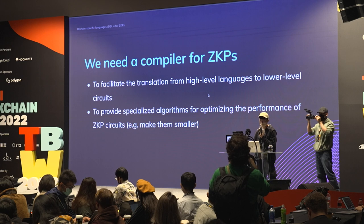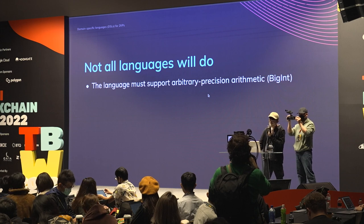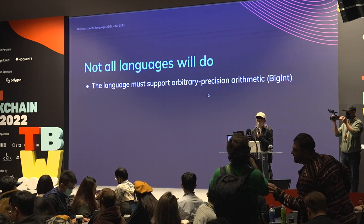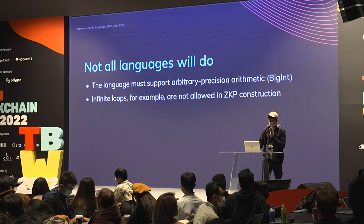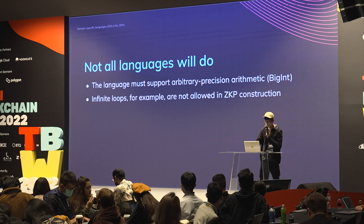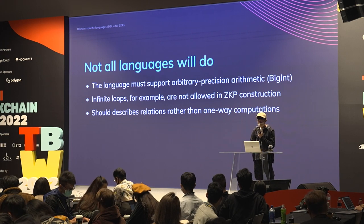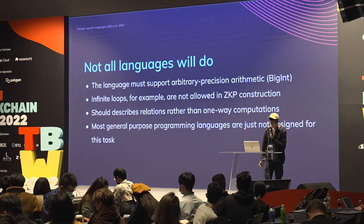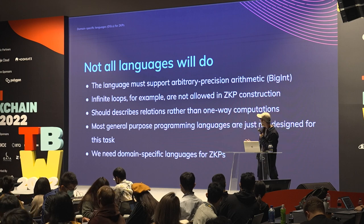The compiler would allow specialized algorithms for optimizing circuit performance. But not all languages will do — the language must support really big integers, prevent developers from writing infinite loops, and it's not really one-way computation but rather describing a relation. Most general purpose languages are not designed for this, which is why we need a domain specific language for ZKPs.